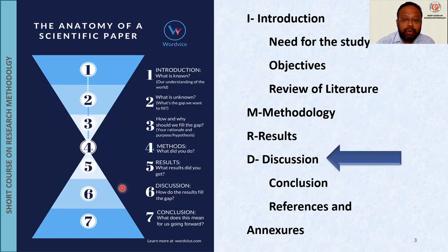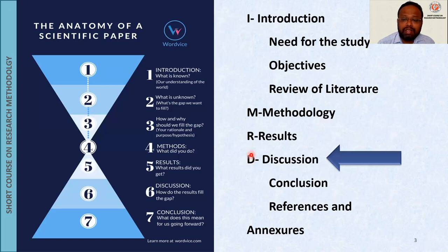Before going to the topic of discussion, I want you all to get oriented to the basic anatomy of a scientific paper or any research, which will be written in IMRAD format — that is I, M, R, D. This is the basic skeleton of any research. You will have an Introduction for I, Methodology for M, Results for R, and D for Discussion.